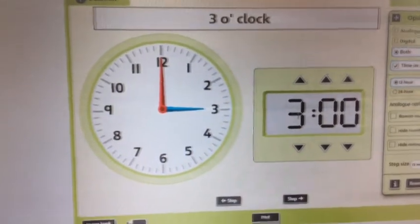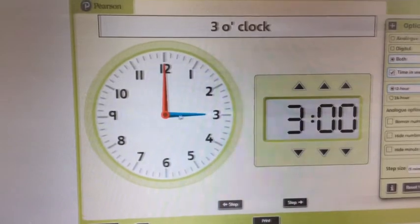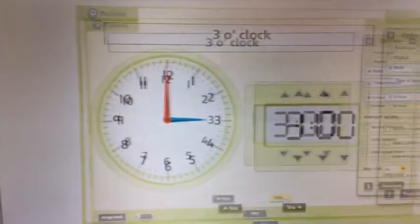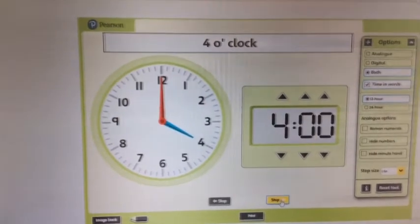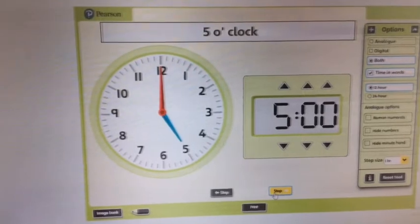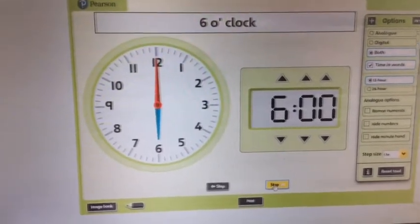3 o'clock, and digitally we write that as 3:00, because it was 3 o'clock and no minutes have gone past 3 o'clock. So we've got 4 o'clock, or 4:00, 5 o'clock, 6 o'clock and so on.